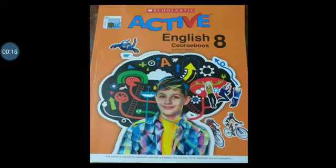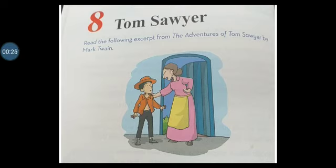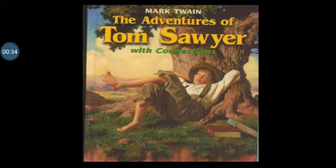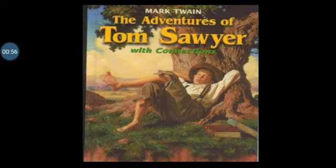Hopefully you have completed your work till chapter number seven. Now we will start chapter eight — Tom Sawyer. The story is written in 1876 by American author Mark Twain. The main theme of this story is the joy of childhood, when the world is full of wonders and children are free of the heavy responsibilities of adulthood.